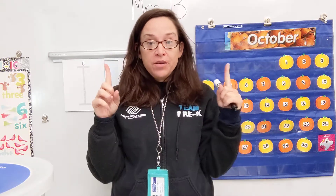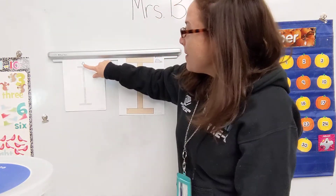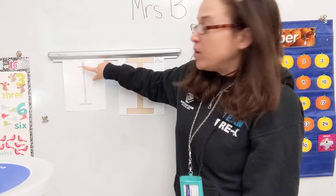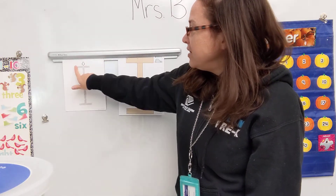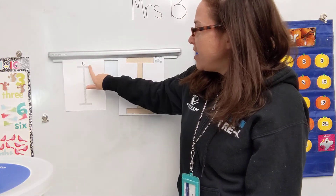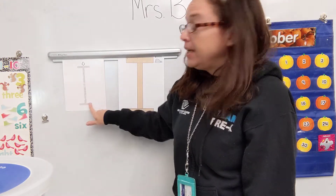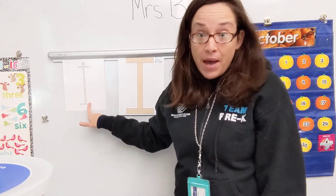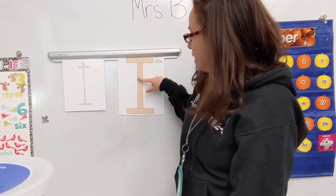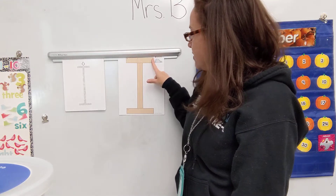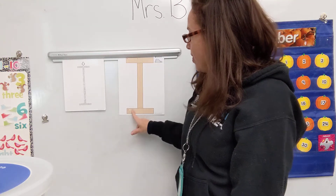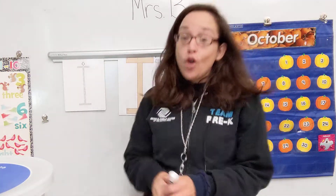So with all our letters we start them at the top. This one we're gonna go big line down, little line across the top, little line across the bottom. We're gonna try it again: big line down, little line across the top, little line across the bottom.